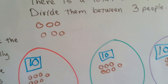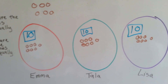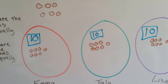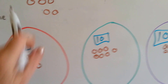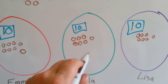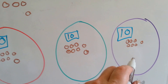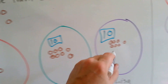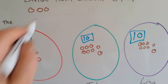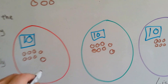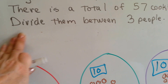Now there are 6 cookies left that we need to split between the 3 girls. We'll give 1 to Emma, 1 to Tala, and 1 to Lisa — those are gone. And now there are 3 cookies left and they can each get 1 more: 1 to Emma, 1 to Tala, and 1 to Lisa. Now all 3 remaining cookies are gone.